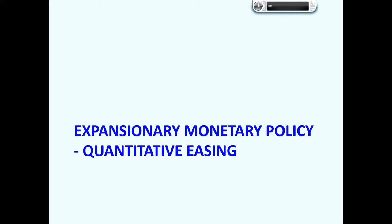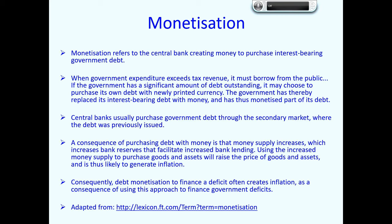Next, I would like to discuss expansionary monetary policy and more specifically quantitative easing. First, I would like to explain monetization. Monetization refers to the central bank creating money to purchase interest-bearing government debt. When government expenditure exceeds tax revenue, it must borrow from the public. If the government has a significant amount of debt outstanding, it may choose to purchase its own debt with newly printed currency, thereby replacing its interest-bearing debts with money and thus monetizing a part of its debt.